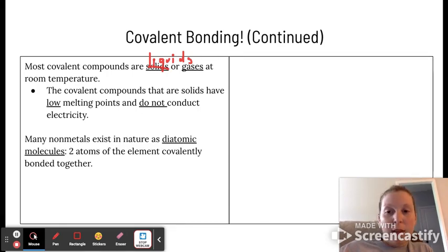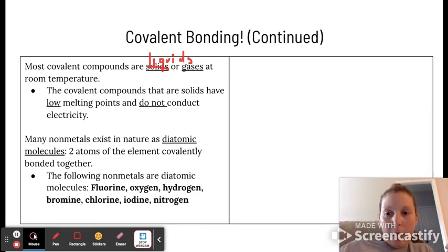Many nonmetals exist in nature as diatomic molecules, which are two atoms of the same element covalently bound together. These are referred to as diatomic elements because they're two identical elements together. I talk about these as the socks of the periodic table because they naturally come as a pair. Here's our list: fluorine, oxygen, hydrogen, bromine, chlorine, iodine, and nitrogen.